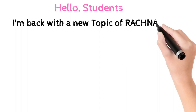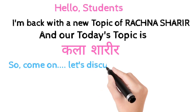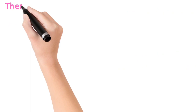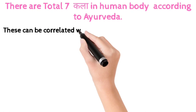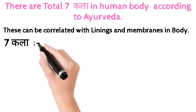Hello students, I am back with a new topic of Rachna Sharir and our today's topic is Kala Sharir. So come on, let's discuss this topic in detail. You will write the notes by pausing the video. There are total seven Kala in the human body according to Ayurveda. These can be correlated with the linings and membranes in the body.